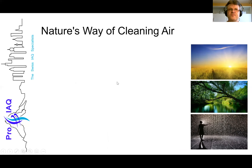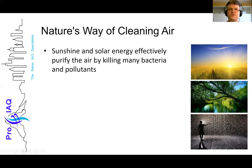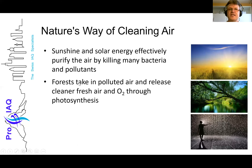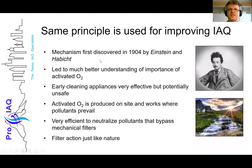So how does nature clean the air? The sun is very important because it creates UV light which kills bacteria and pollutants. Forests take in polluted air and release fresh air and oxygen. Rainfall is like a wash. The same principle that nature uses was discovered by Einstein and Habicht. Einstein, living in Switzerland at that time, experienced stale, depressing air in the basement and invigorating fresh air climbing mountains, and figured out it has to do with activated oxygen.